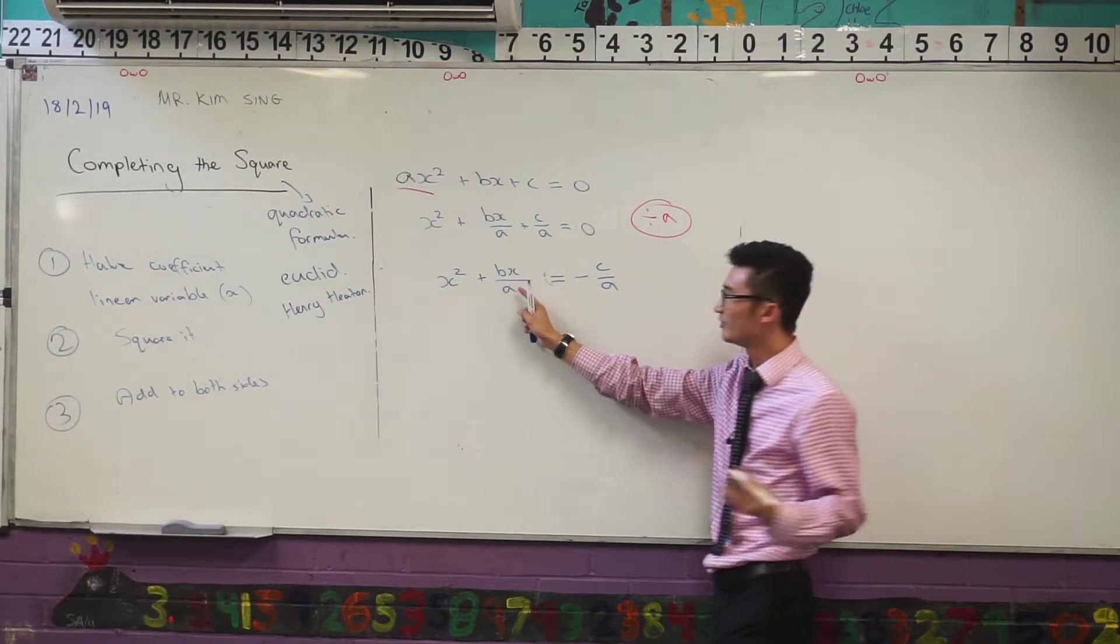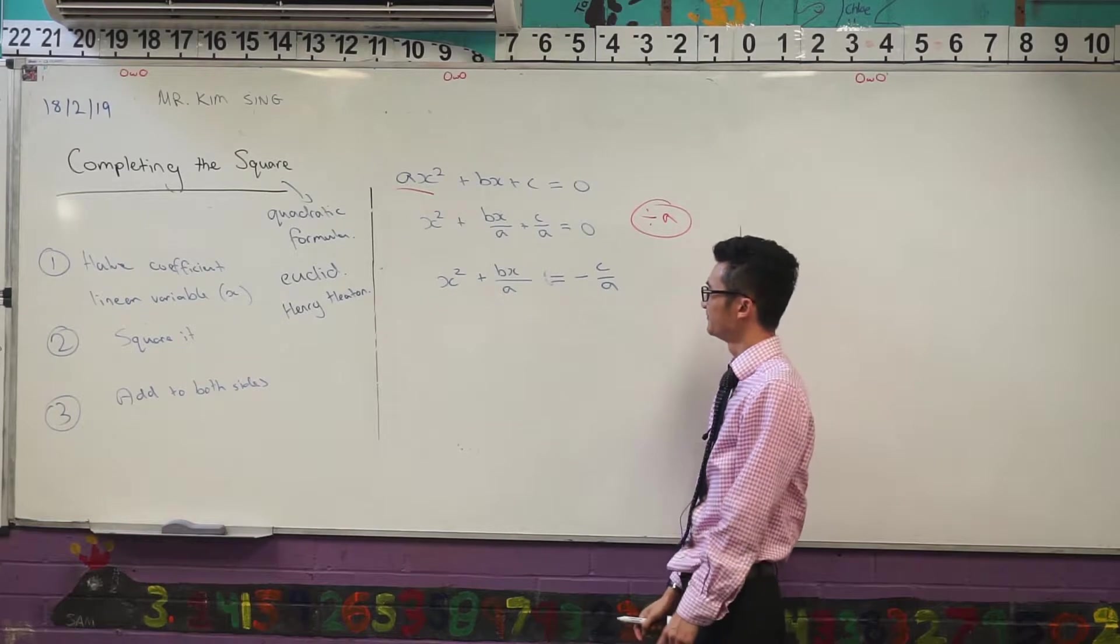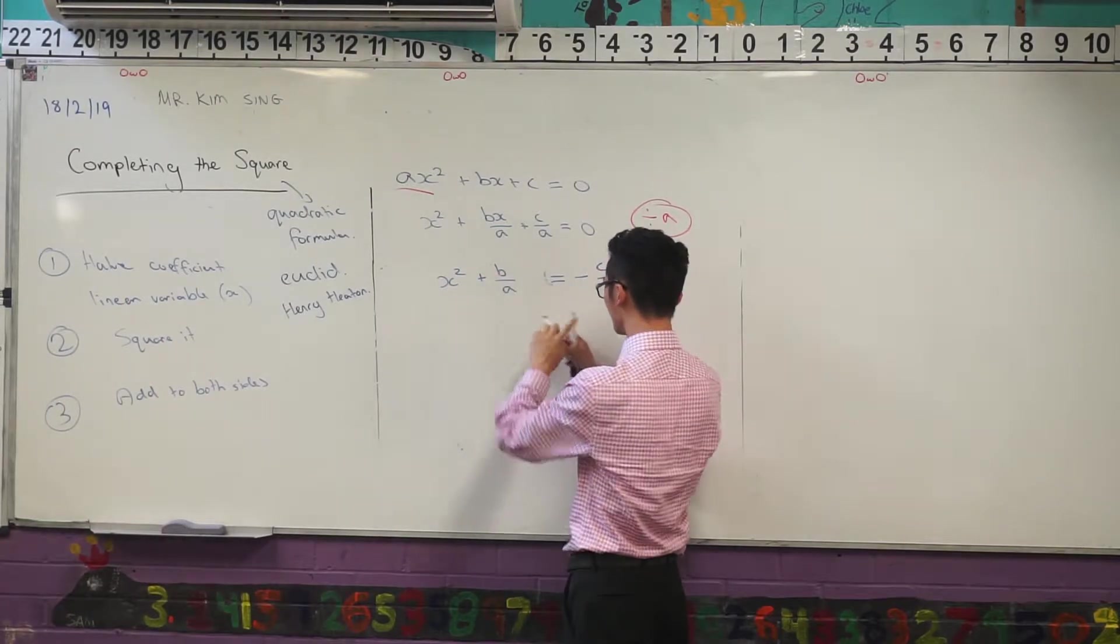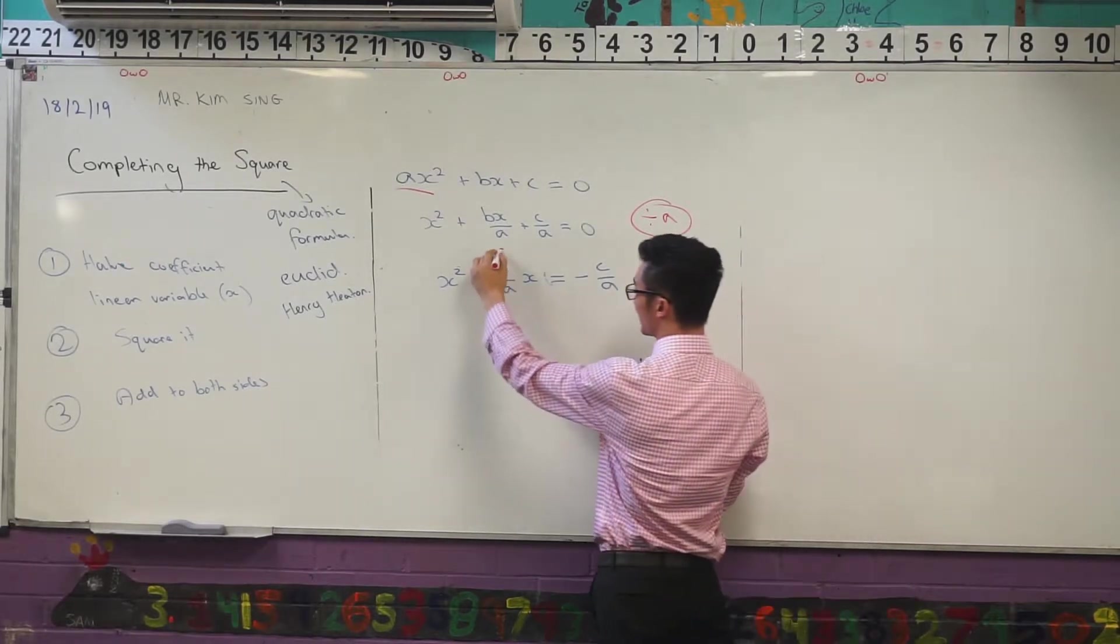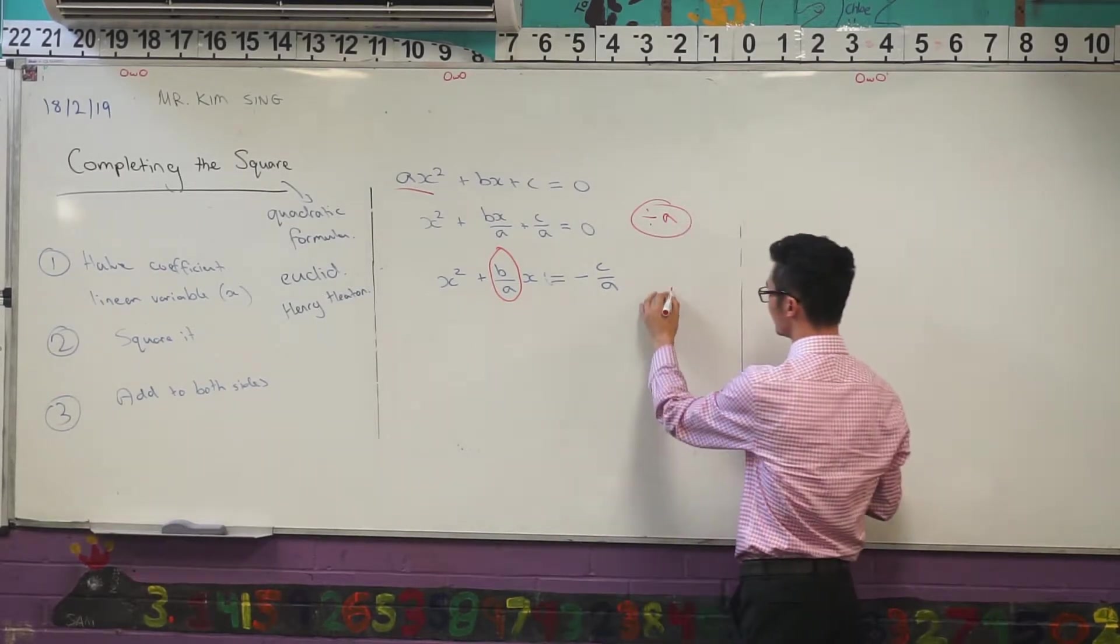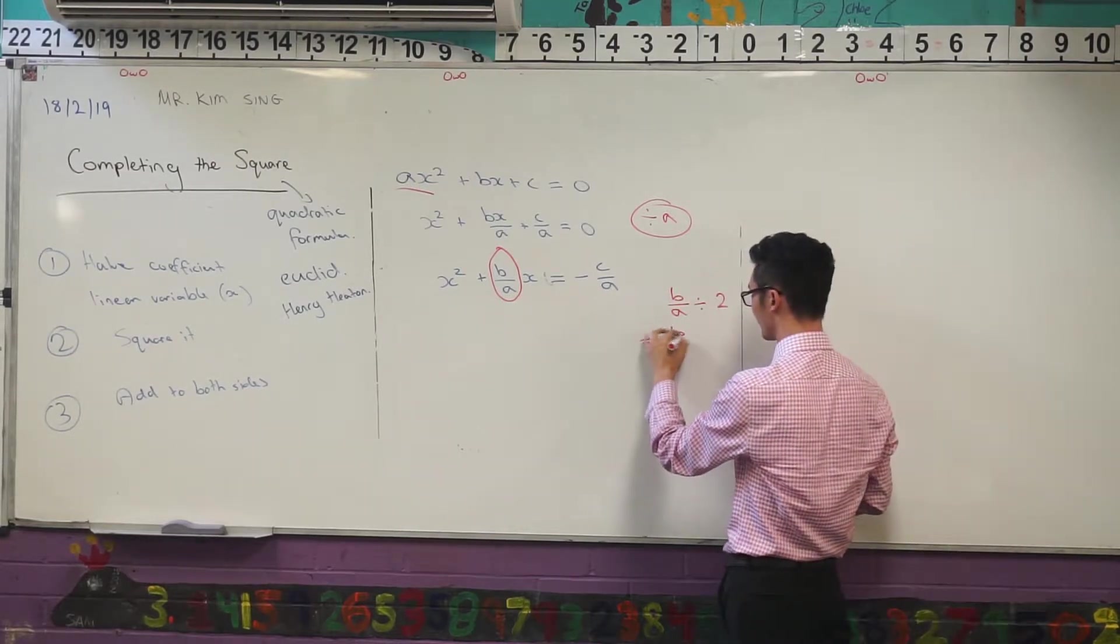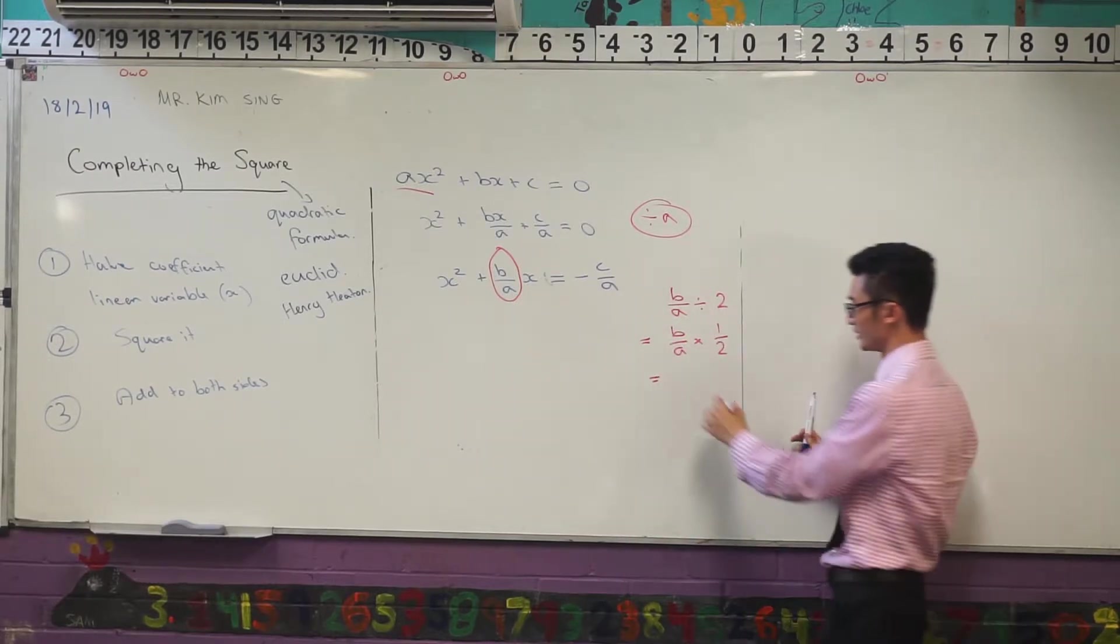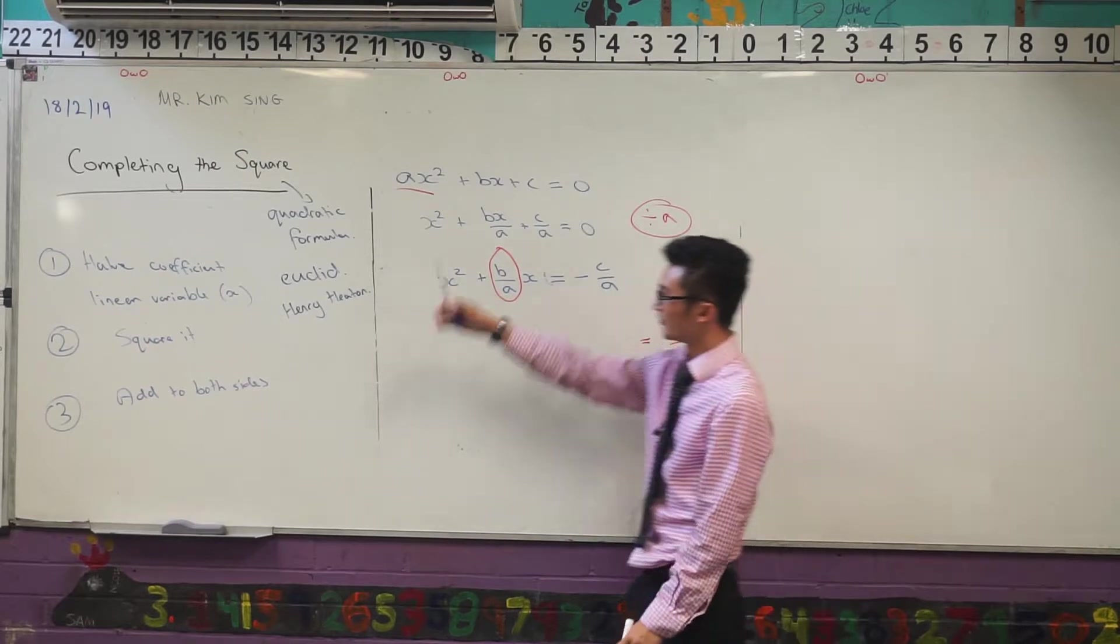Maybe if I write this another way, instead of writing bx on a, I could also write that as b over a times x. That would be the same thing. So now hopefully it's a bit clearer that this actually is your coefficient. This is what is in front of the x. But I want to take half of that. So halving something, you can think of as dividing by 2, or maybe more helpful for us, we can multiply it by half. That's going to be more helpful because now I can simplify that a bit more. So I can say that's b over 2a. So b over 2a, I've got half the coefficient.